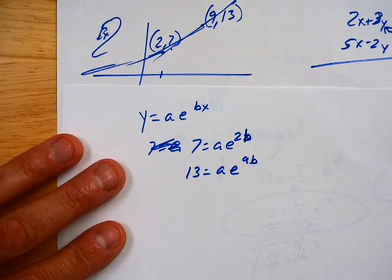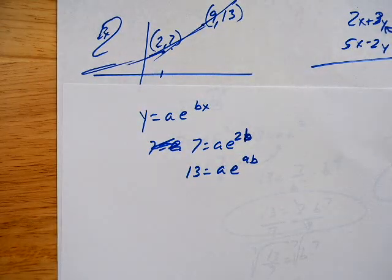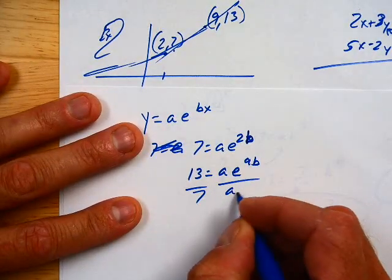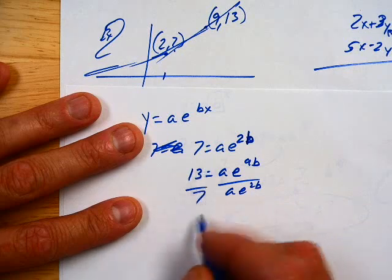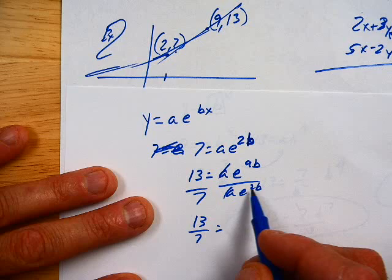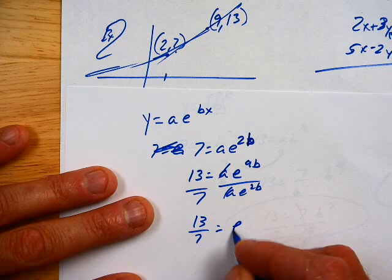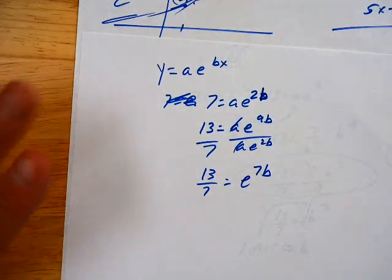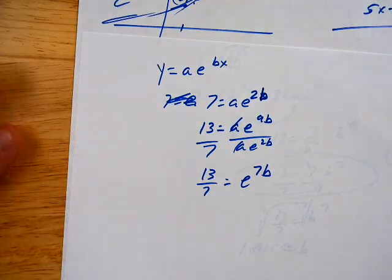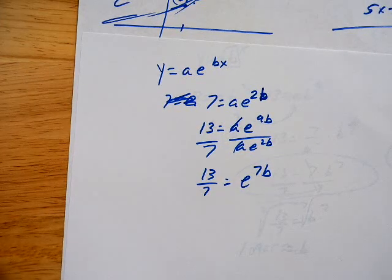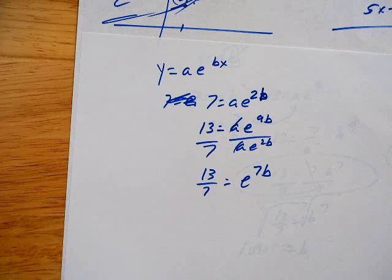And then from there, we can do it using either method again. We can use a substitution, or we can use a division. Which way do you want to do it? 13 sevenths equals, and subtract my exponents, E to the 7B. How do we find out what B is? Well, I think they're totally out of order here.